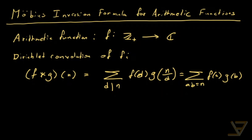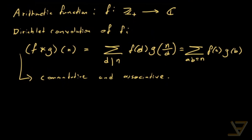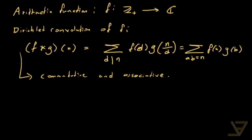Something I should mention, and that we're going to need, is that the Dirichlet convolution is commutative and associative. Commutativity isn't hard to prove, but associativity does take some effort, and I'm not going to prove either in this video — I'm just going to be using them.